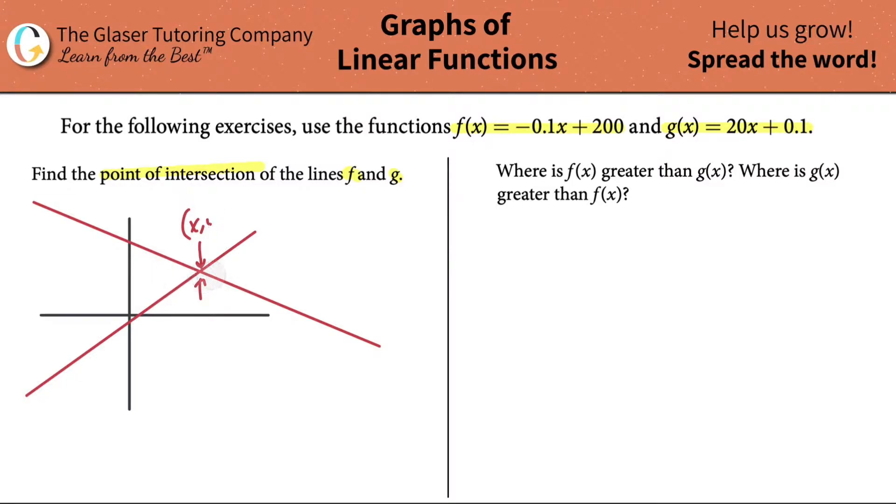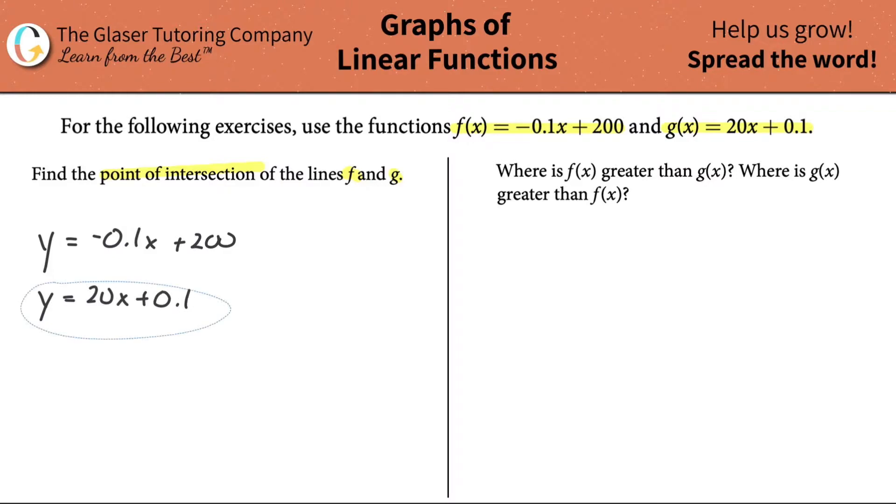So that being the case, I know now what I can do is simply going to be to call each of these functions now or plug in essentially a y for both of them. y equals negative 0.1x plus 200. y equals 20x plus 0.1.